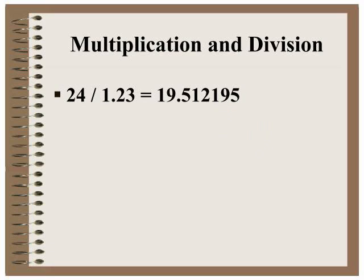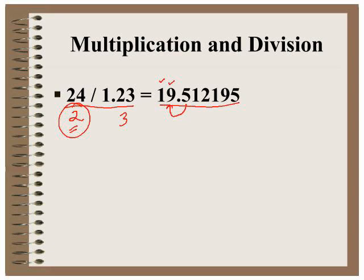The rules for dividing are the same as for multiplying. We take 24 divided by 1.23 — this comes out on the calculator. 24 contains two significant figures; 1.23 contains three significant figures. We need to round to the worst measurement, which has the fewest significant figures — our final answer is allowed only two significant figures. Here are our two significant figures, but we look one number past: the 5 rounds this to 20. For this zero to be significant, we need to put a decimal or write this as 2.0 times 10 to the first power.